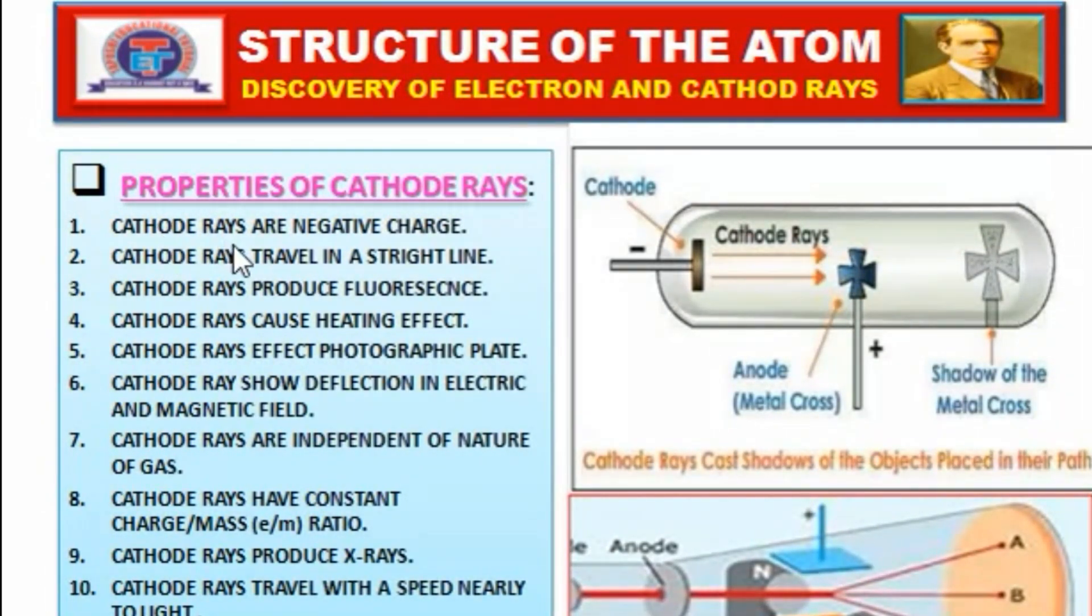The first property: cathode rays are negatively charged. This means when cathode rays pass through a strong electric field, they deflect towards the positive charge. This shows that they consist of negatively charged particles.